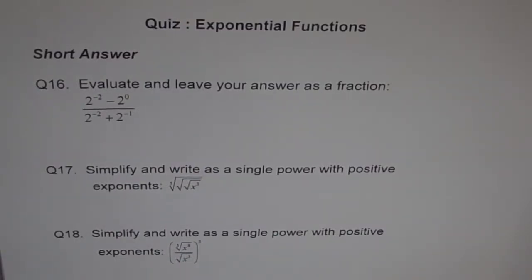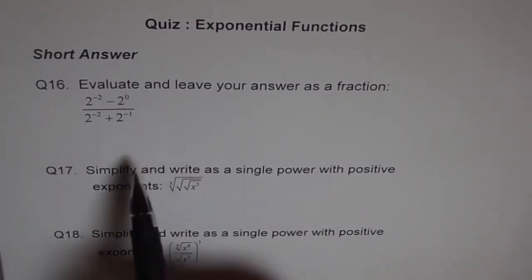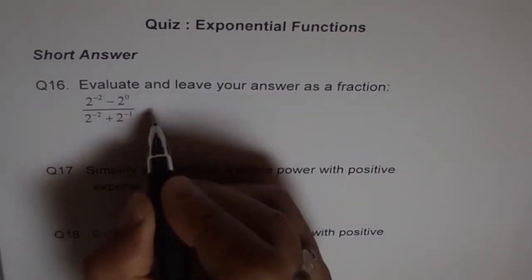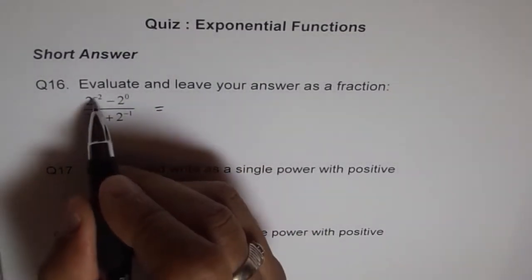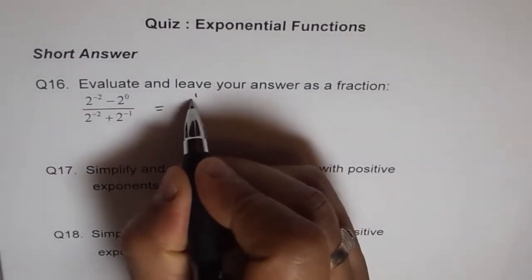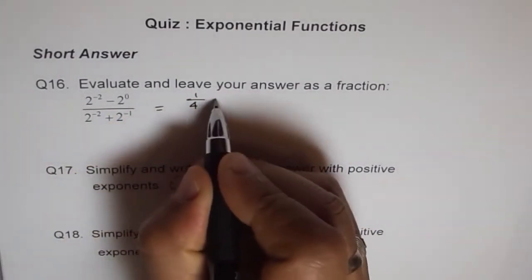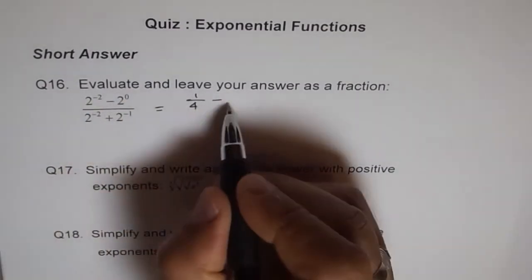Here we have another set of three questions — a short answer quiz on exponential functions involving fractions, which many students find very difficult. This tests their ability to deal with fractions. To evaluate this, we can write 2 to the power of minus 2, which means 1 over 2 squared. 1 over 2 squared is 1 over 4. And anything to the power of 0 is 1.